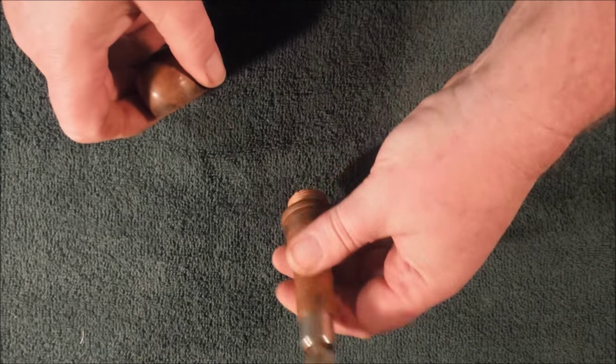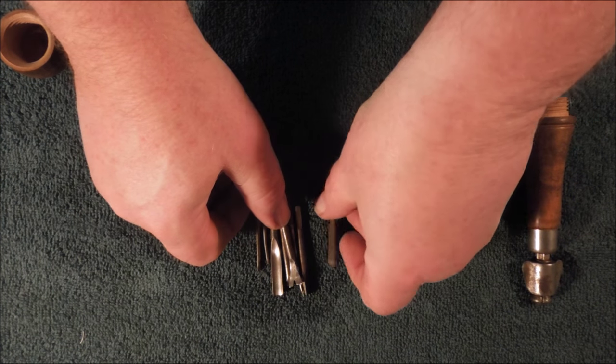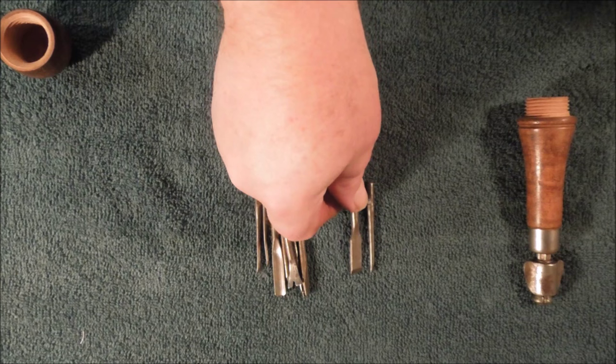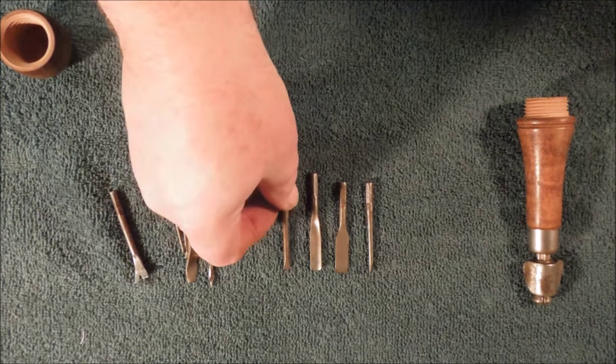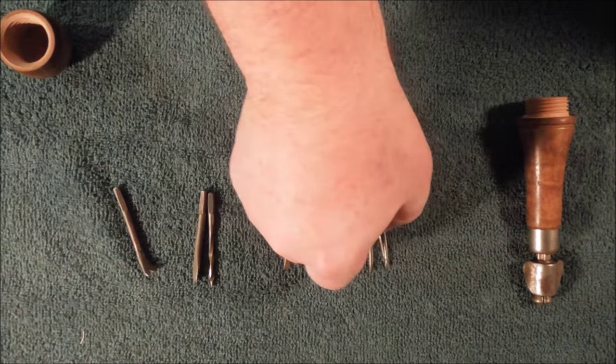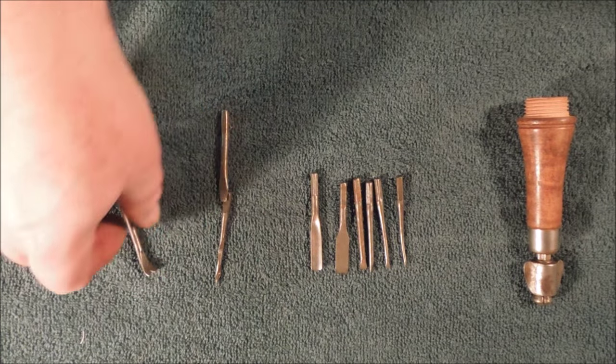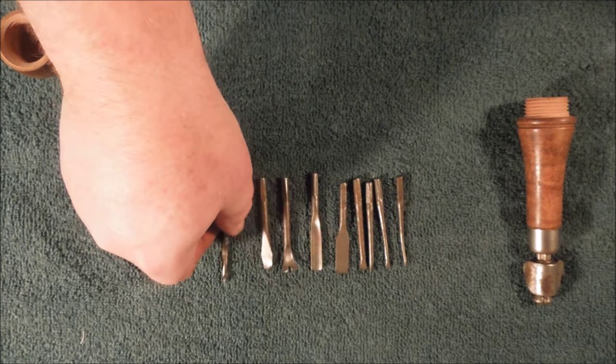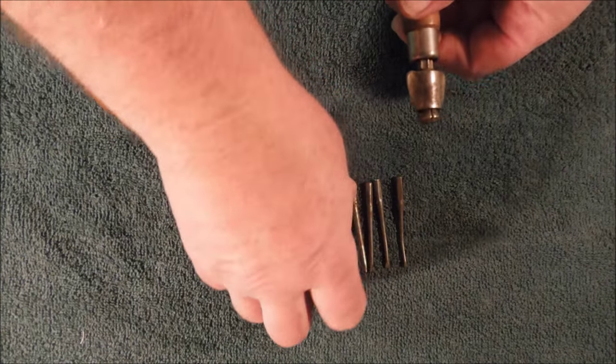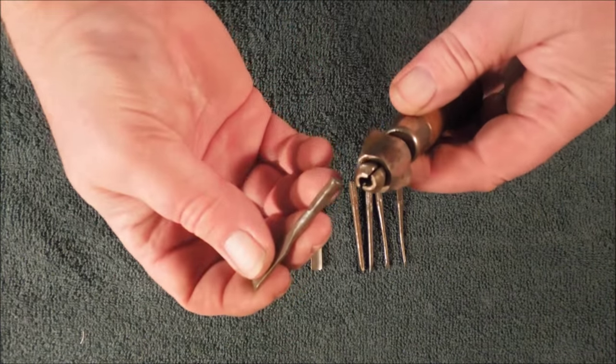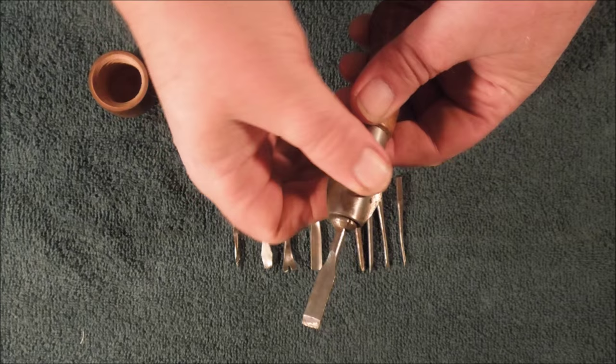Then you can take one of the many tools. In this case, we'll use the chisel. You take the square shank and then you tighten the screw up.